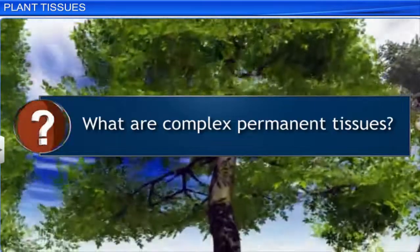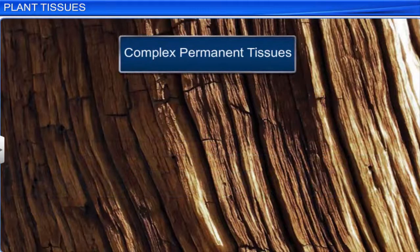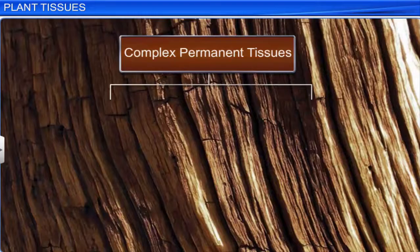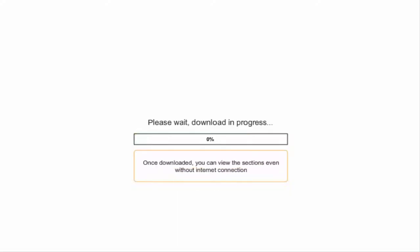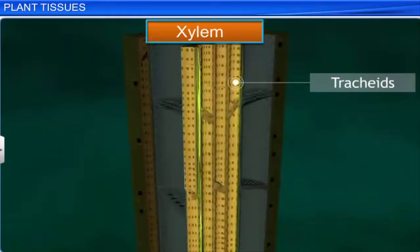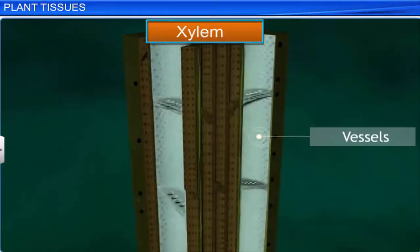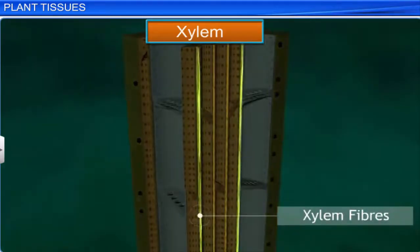Complex permanent tissues are made of more than one type of cells that coordinate together to perform a common function. These are of two types: xylem and phloem. The different components of xylem are tracheids, vessels, xylem parenchyma, and xylem fibers.